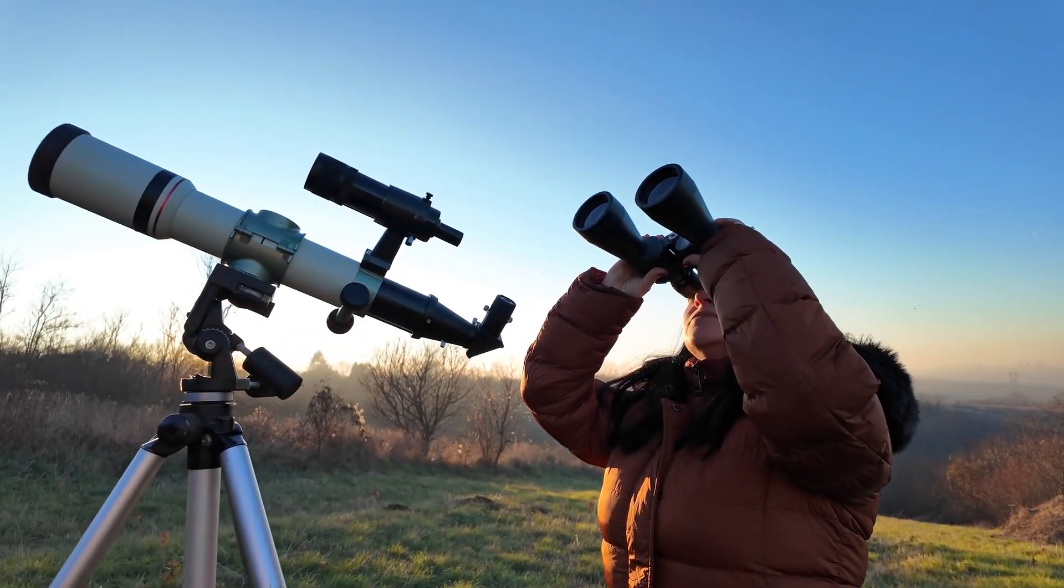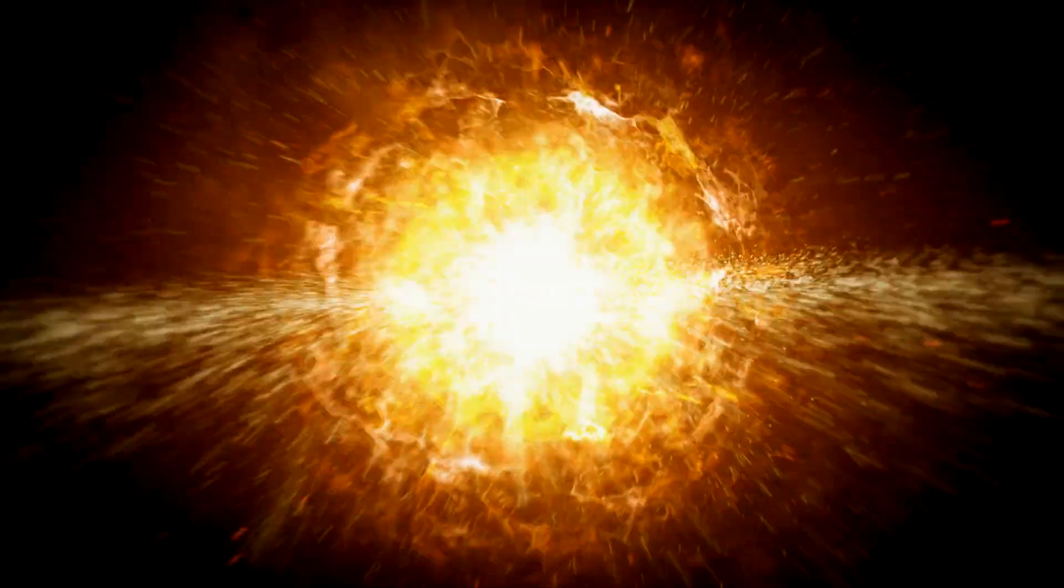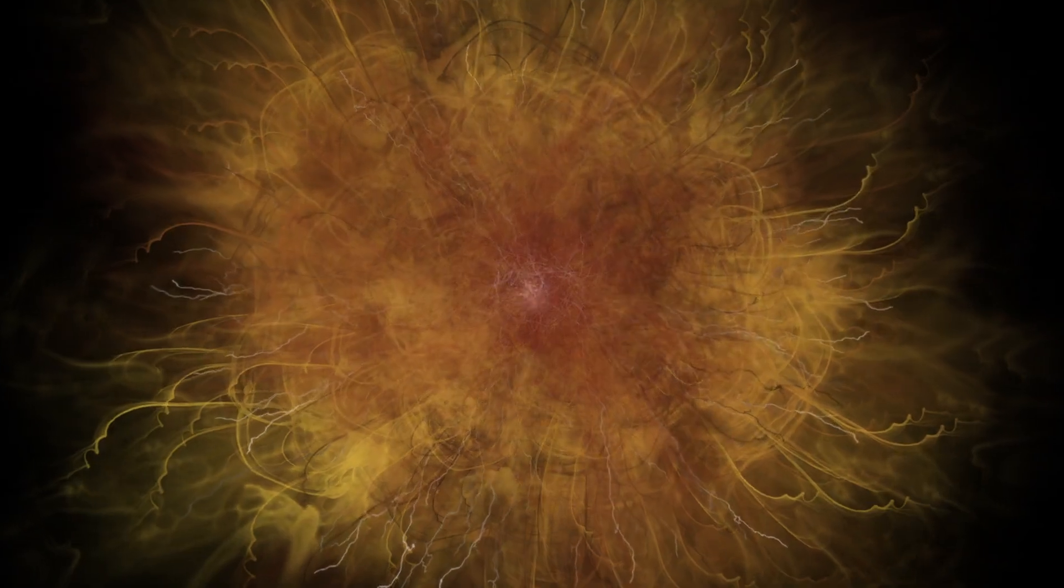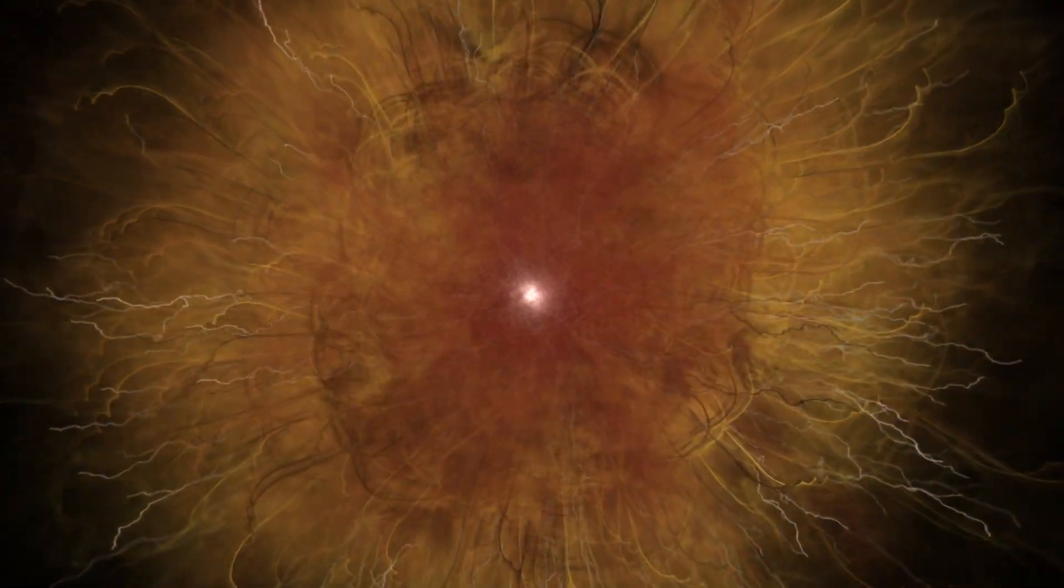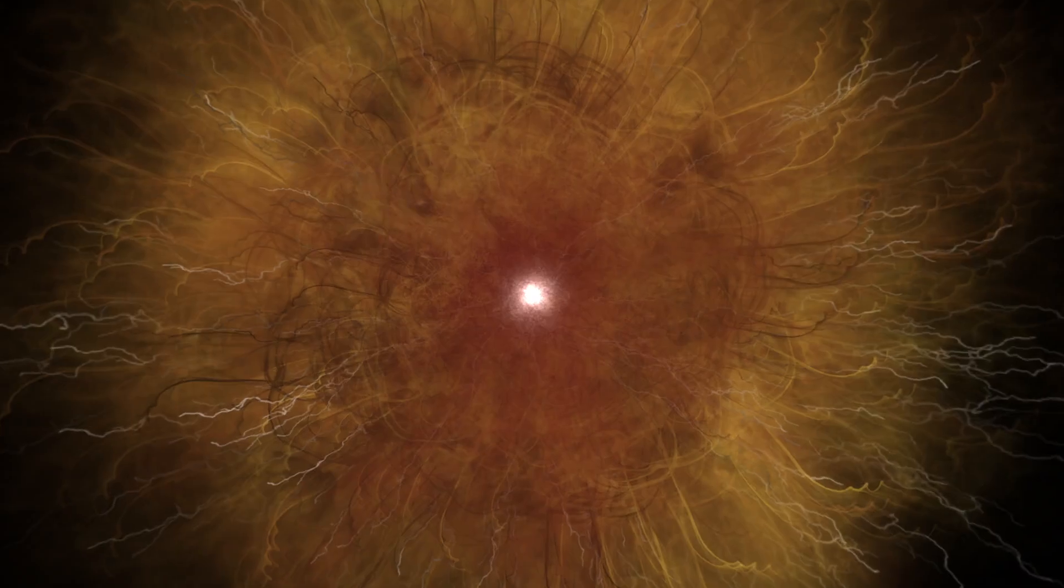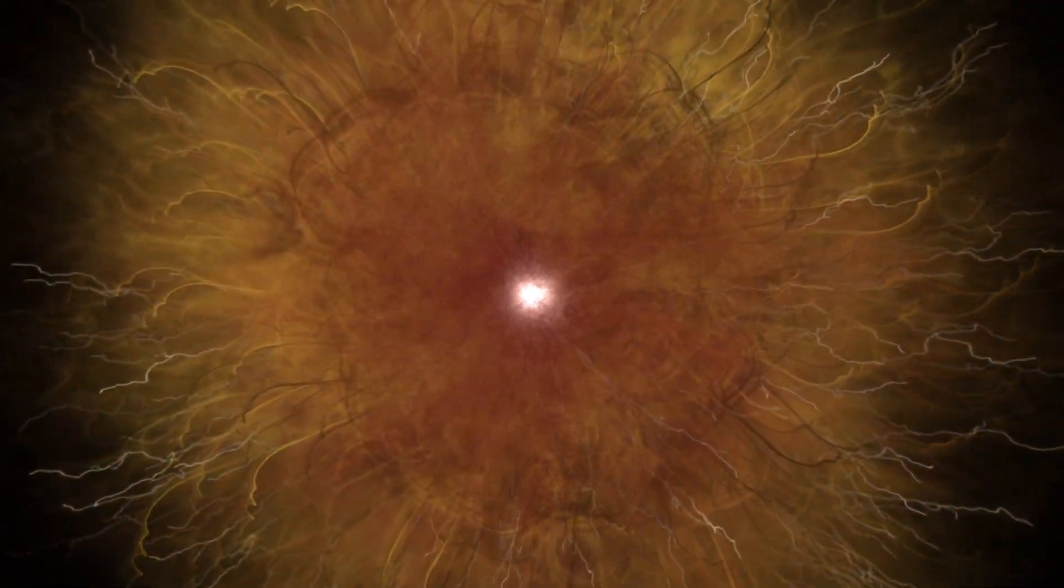But fear not, cosmic detectives. The dimming wasn't a prelude to Betelgeuse's supernova, as some speculated. Instead, it was a solar sneeze, the ejection of a massive dust cloud from the star's surface, temporarily blocking its brilliant light.